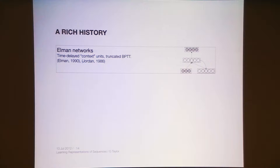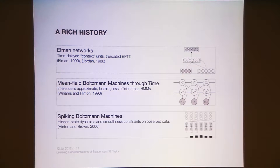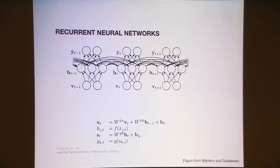A brief history: these ideas have been around for a long time. Elman networks go back to the early 1990s, and Mike Jordan was working on these models in the 1980s, using time-delayed context units to introduce temporal dependencies into standard neural nets. There was also an early extension of Boltzmann machines through time, proposed by Chris Williams and Jeff Hinton back in 1990 at a summer school, and things like spiking Boltzmann machines — the first use of RBMs to model data.